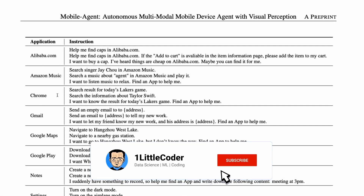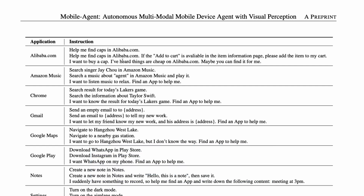They give three types of prompts for each application in the benchmark. For Alibaba.com: the first prompt is 'help me find caps on Alibaba.com'; the second adds 'if add-to-cart is available on the item information page, please add it to my cart'; and the third is much vaguer — 'I want to buy a cap, I've heard things are cheap on Alibaba.com, maybe you can find it for me.' Similarly for Gmail: one prompt says send an empty email to an address; another says tell my friend my new work, find an app to help me — so the agent must identify Gmail itself.